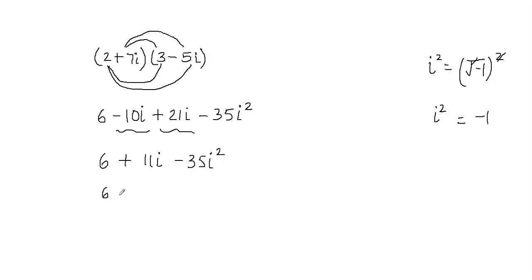So let's do that, 6 plus 11i minus 35 in place of i squared. I'll plug in negative 1, and I'll put that inside the parentheses. Now this will be 6 plus 11i. Negative 35 times negative 1 will be equal to positive 35.